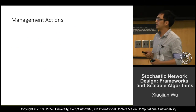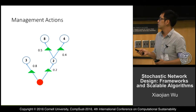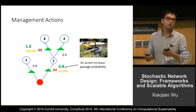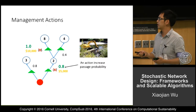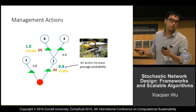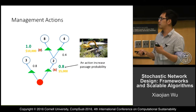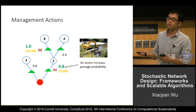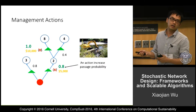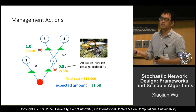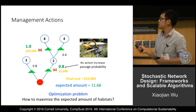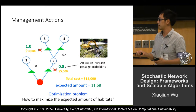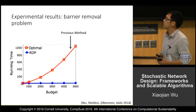We can take management actions to increase the passage probability — for example, removing a barrier by spending money can raise the probability to one. We can also take other minor actions, like building tunnels to help only larger fish, so the probability is not one but a bit higher. By doing this, we can increase the expected amount of accessible habitat. The question is: how do we choose which actions to take to maximize the amount of habitat?